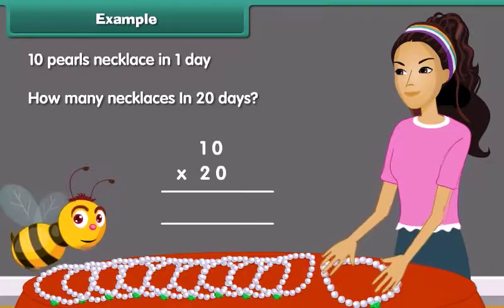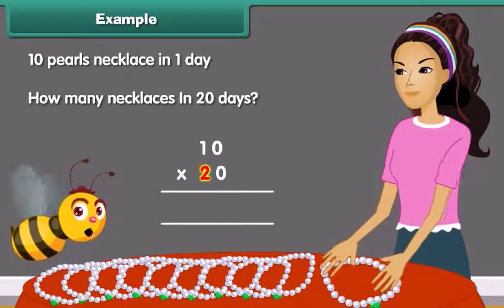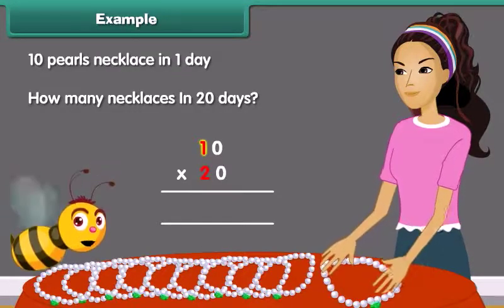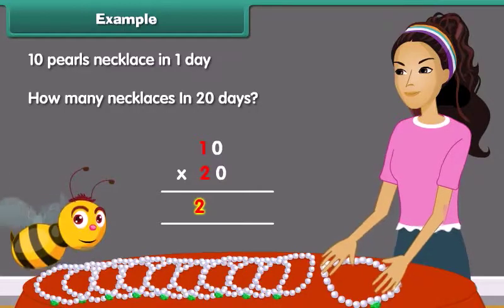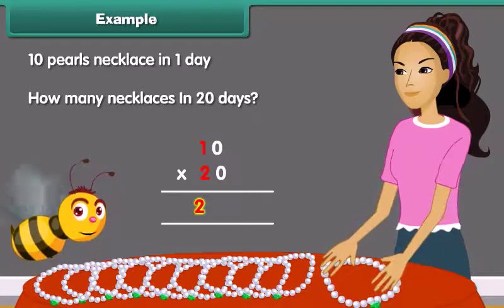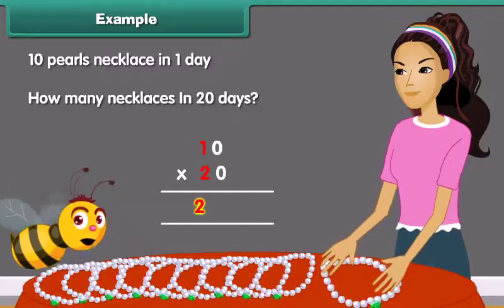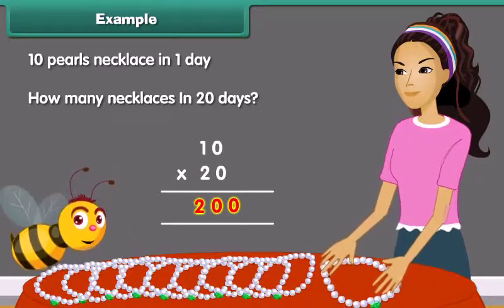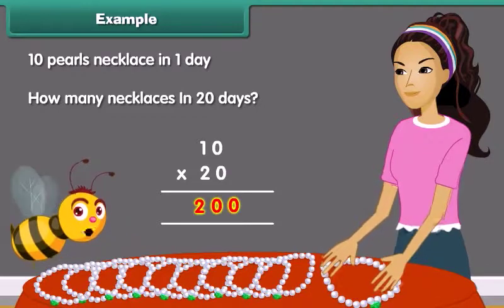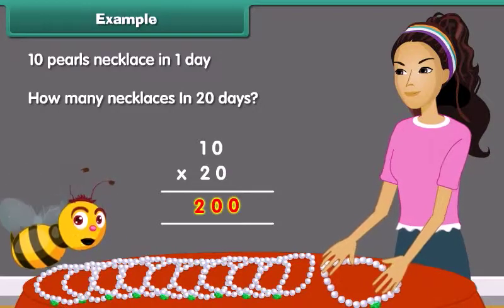Step 1: Multiply the numerals without zeros. 2 multiplied by 1 is equal to 2. Step 2: Count and add the number of zeros toward the right side of the answer. In this case, we have two zeros. Thus, the final answer becomes 200.